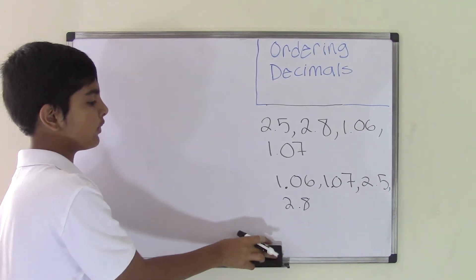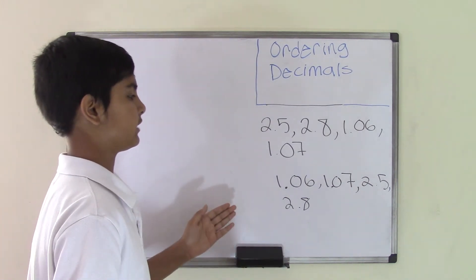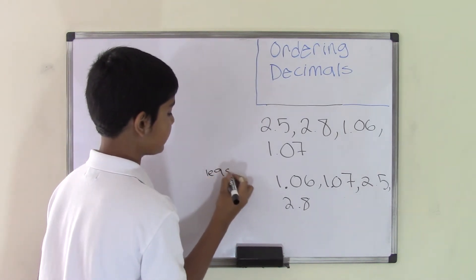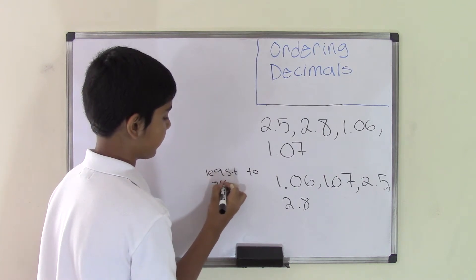So what we did was order this set of decimal numbers from least to greatest. This is called least to greatest form.